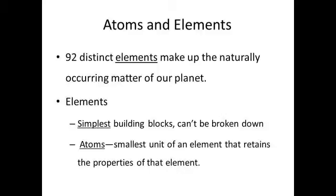There are 92 naturally occurring elements making up the matter of our planet. We can think of elements as the building blocks of matter. They are the simplest, purest forms of matter, as they cannot be broken down into anything simpler through chemical reactions.